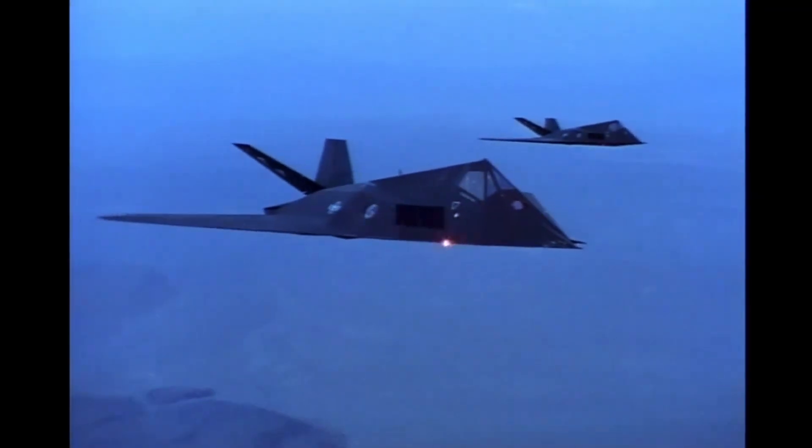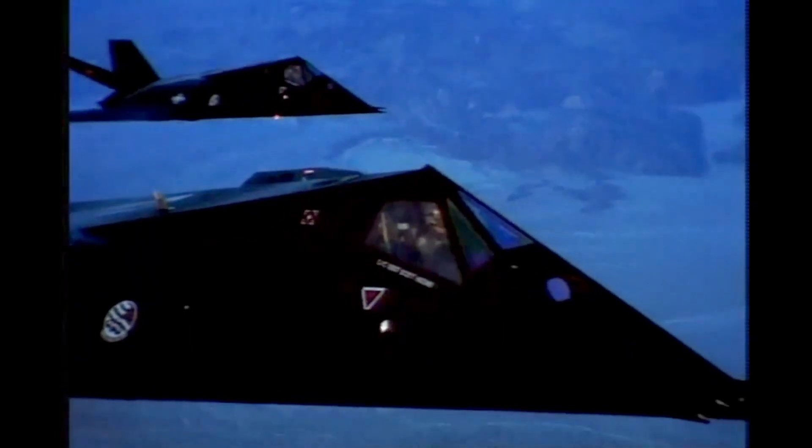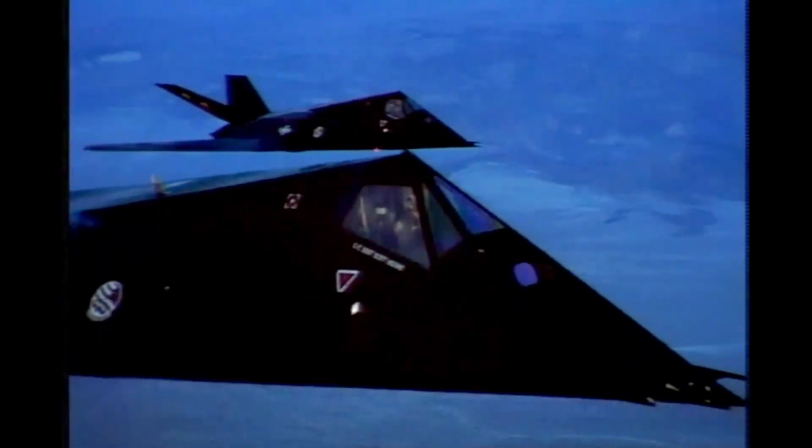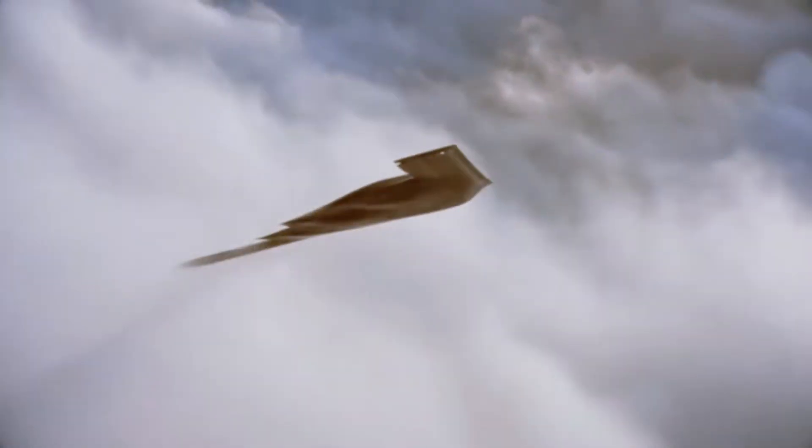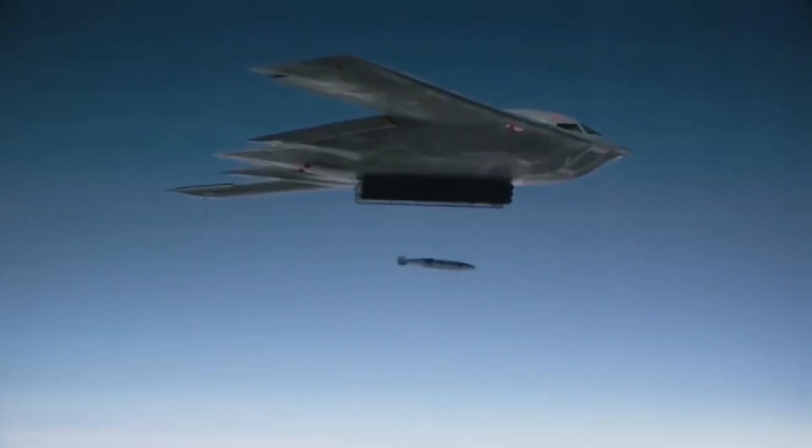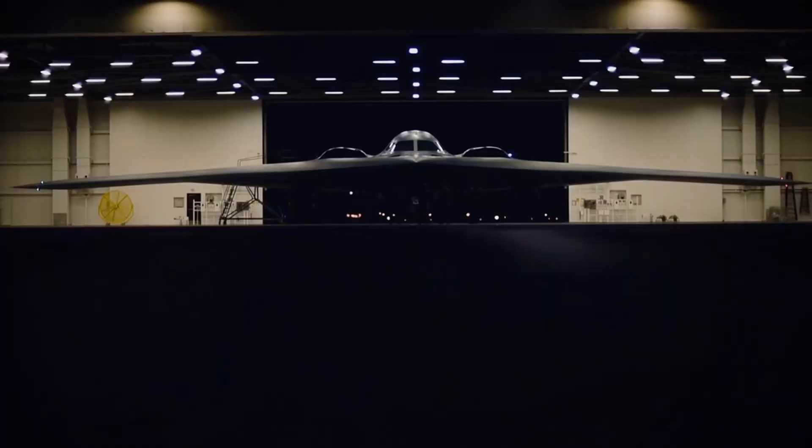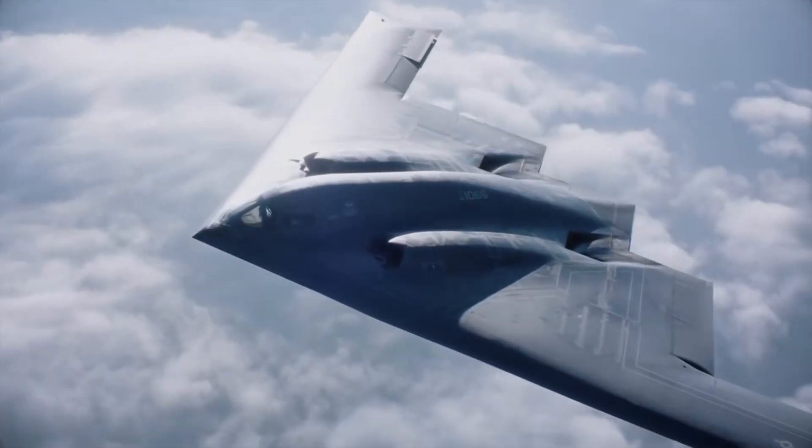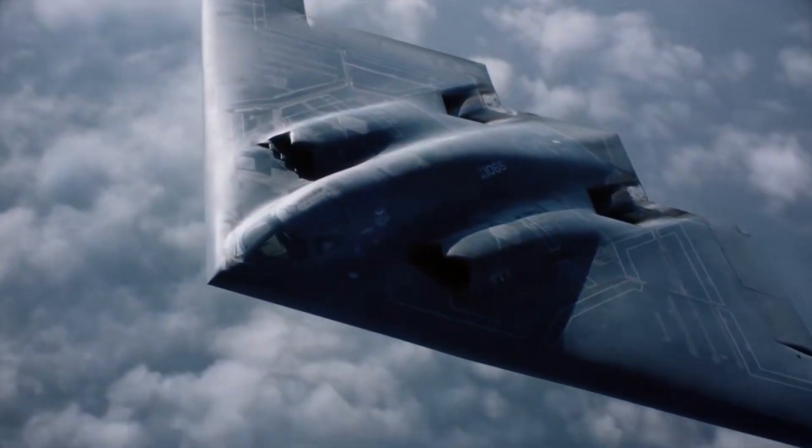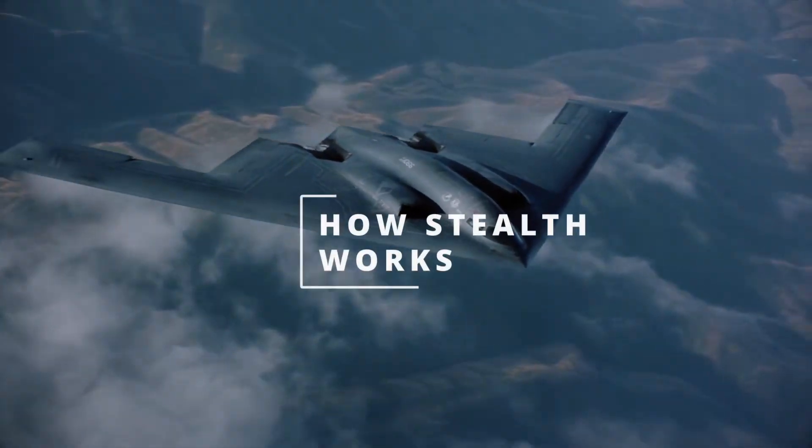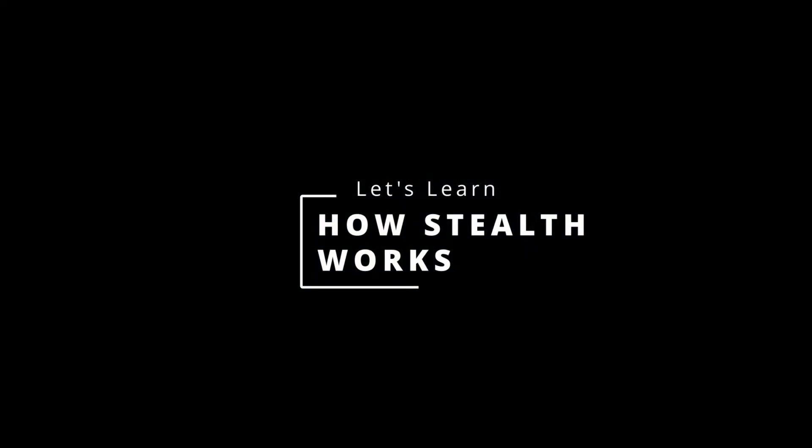We've all seen the stories of F-117s defying air defenses to go straight to the heart of Iraq in Desert Storm, and more recently we saw B-2s strike targets deep in Iran without any hint of real defense. Now it's obvious from these aircraft's unique shape that their form has something to do with their stealthy capabilities, but what is it exactly? That's the question I hope to answer in this video, so let's dive into how stealth works.